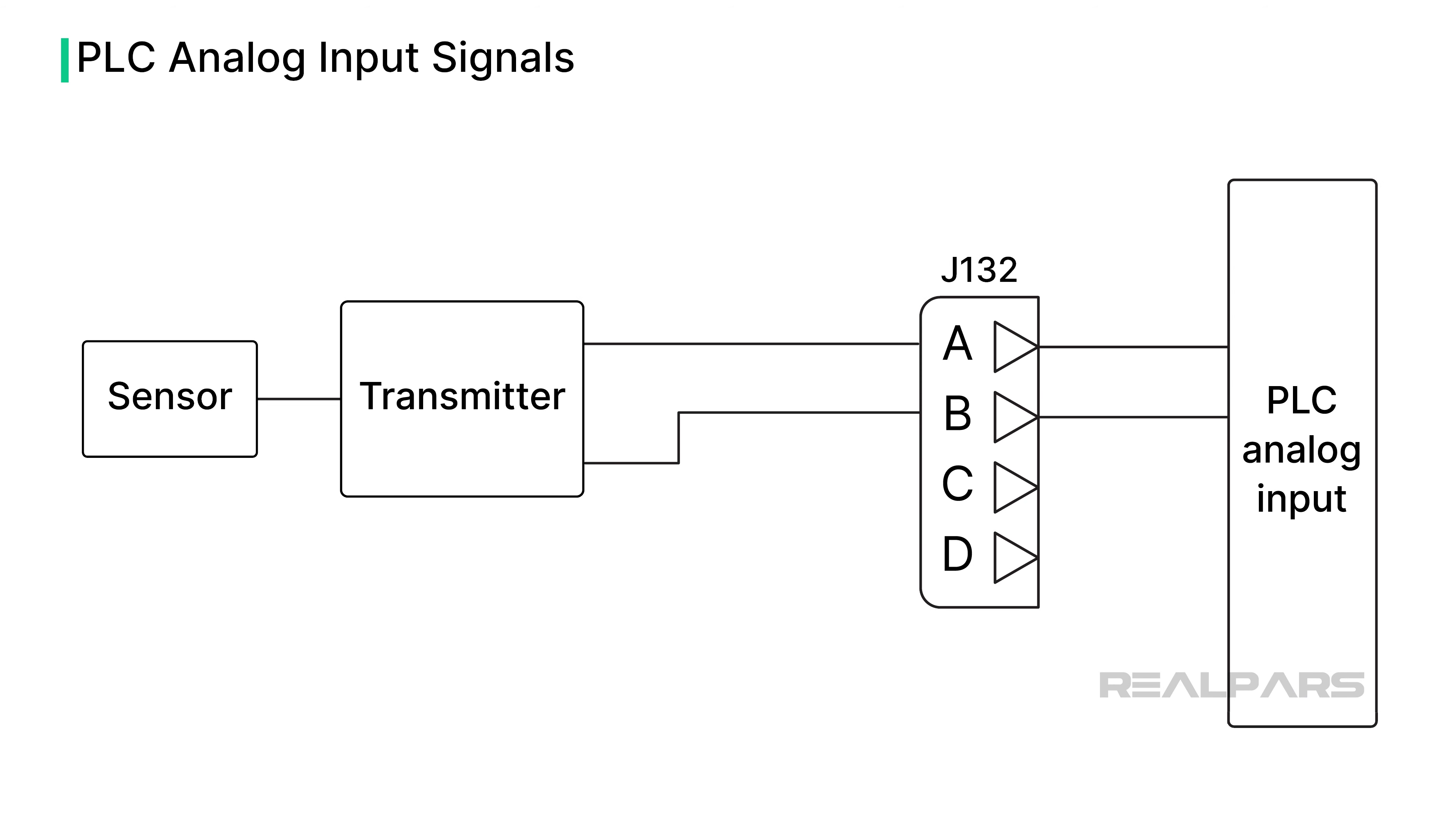Okay, let's look at PLC voltage and current analog input signals and where they originate. Typical voltage signals include 1 to 5 volts, 0 to 10 volts, and negative 10 to positive 10 volts. The most commonly used analog signal is 4 to 20 milliamps current.